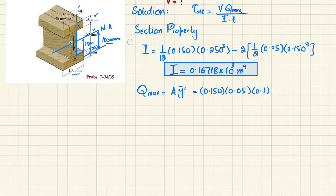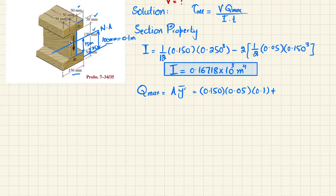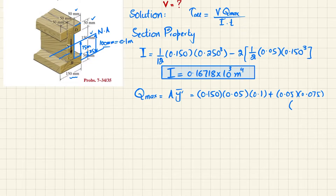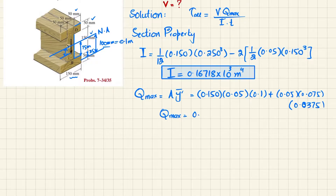For the second sub-area: width = 0.05 m, height = 75 mm = 0.075 m, so A₂ = 0.05 × 0.075. Its centroidal distance from the neutral axis y̅₂ = 75/2 = 37.5 mm = 0.0375 m. Calculating both terms gives Q_max = 0.890625 × 10⁻³ m³.